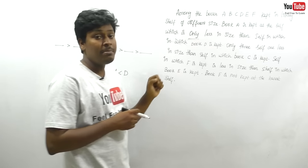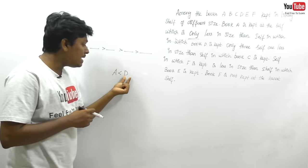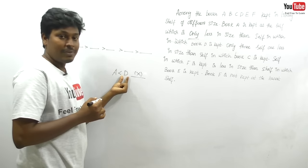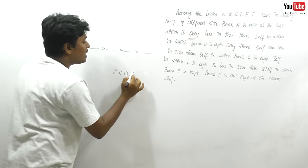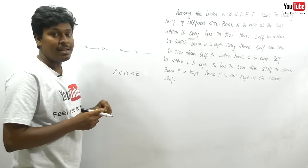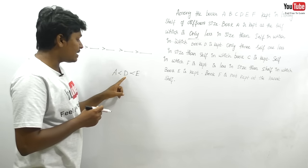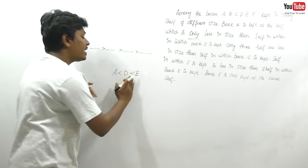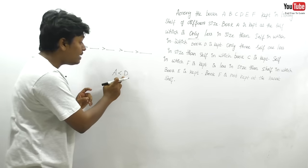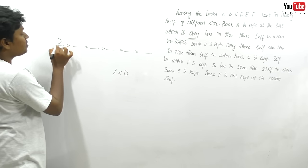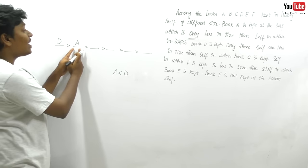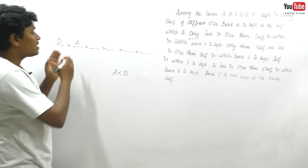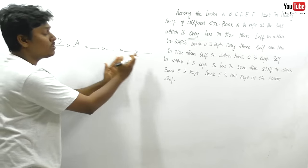'Only' is the major word in every arrangement question. Here, A should be lesser than only D — meaning no other book is bigger than D. If we placed another book, say E, above A, then A would be lesser than both D and E, contradicting 'only D.' So D must be the largest shelf (position 1) and A must be second.